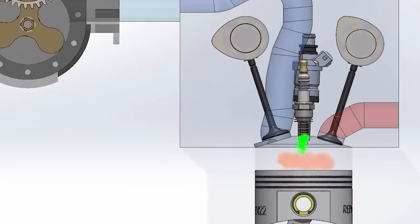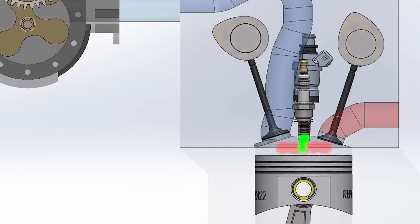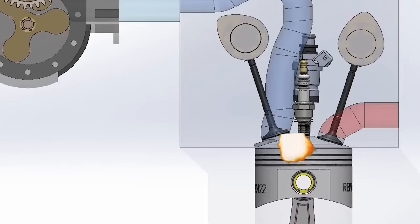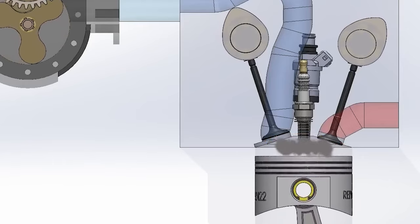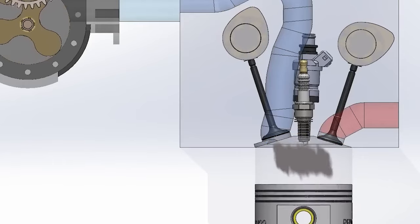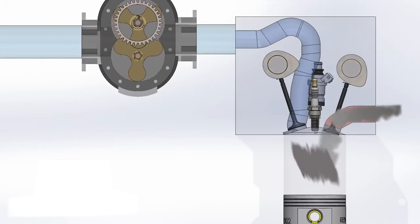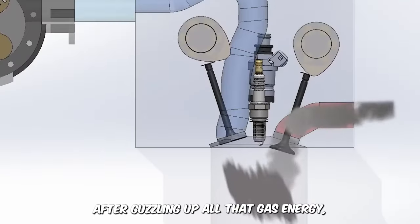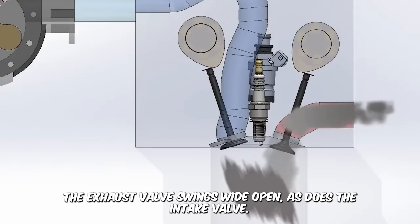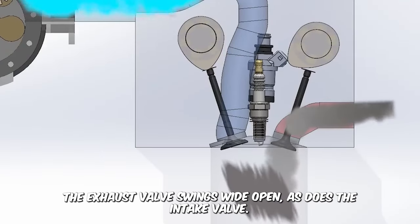Right at the brink of the top dead center, fuel is injected under serious pressure, followed by a spark plug lighting the fireworks, which means expansion in full swing. This power surge slams the piston back to the bottom dead center. After guttling up all that gas energy, the exhaust valve swings wide open, as does the intake valve.